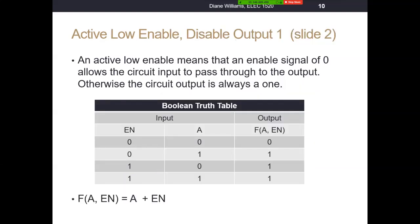We can now expand that into a Boolean truth table. Active low enable means the enable signal is a zero — the circuit is activated, and whatever's on input A flows through to the output. So when enable is zero and A is zero, the output is zero; when enable is zero and A is one, the output is one. The circuit is disabled when enable is a one, because active low enable means enable the circuit when it's zero, disable it when it's one. The output is always a fixed one when disabled. Solving for the single zero, our max term is A OR'd with enable, describing this active low, disable output one circuit.